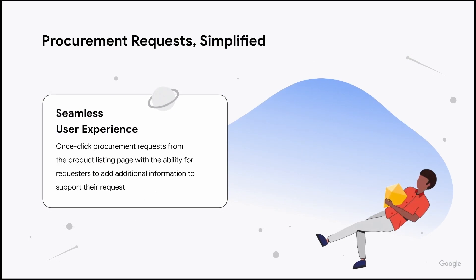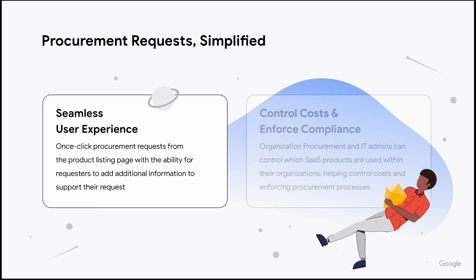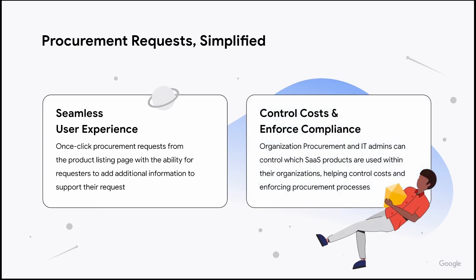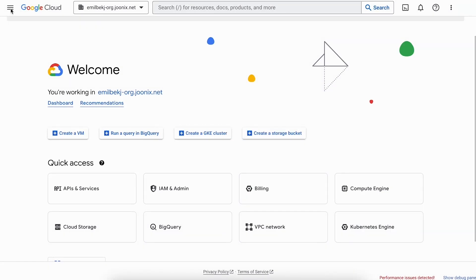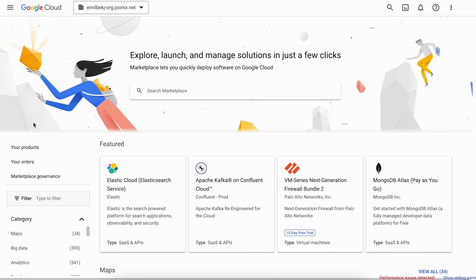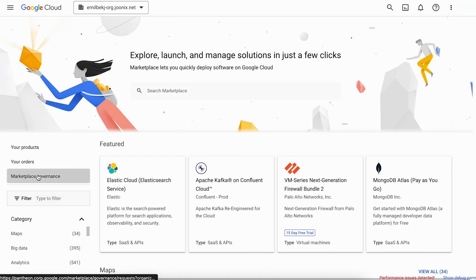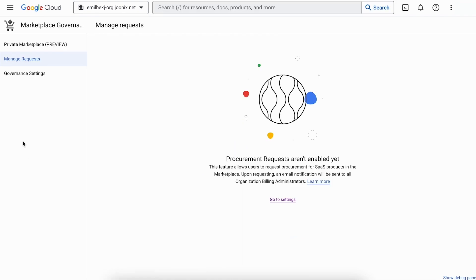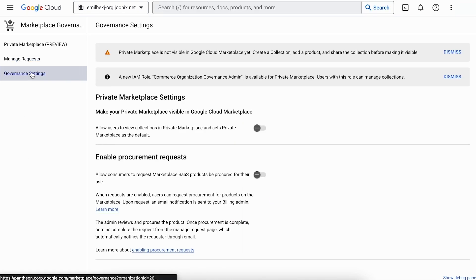This feature allows users to seamlessly request approval to procure SaaS products from Google Cloud Marketplace. This helps maintain both control and agility in software purchasing. And turning it on takes just a few clicks. Organization administrators can visit the Governance Settings page by clicking on Marketplace Governance. Toggle this feature on from the Enable Procurement Requests section.